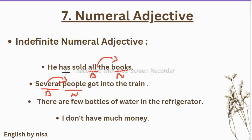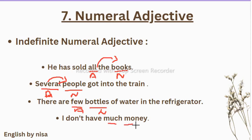Several people — we don't know the exact number, so it is an uncountable noun context. There are few bottles of water in the refrigerator — 'bottle' is the noun, the exact number is not given, so 'few' is the indefinite numeral adjective. I don't have much money — 'money' is the noun and 'much' shows the quantity without an exact number. When we don't give exact numbers, we use indefinite numeral adjectives.